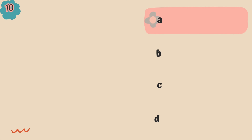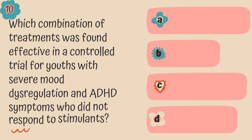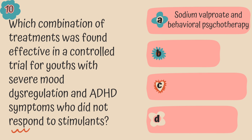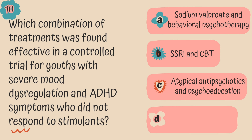Question 10. Which combination of treatments was found effective in controlled trials for youth with severe mood dysregulation and ADHD symptoms who did not respond to stimulants? Is it A. Sodium valproate and behavioral psychotherapy, B. SSRIs and cognitive behavioral therapy, C. Atypical antipsychotics and psychoeducation, or D. Stimulants and SSRI?